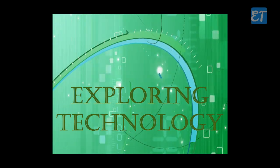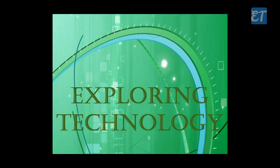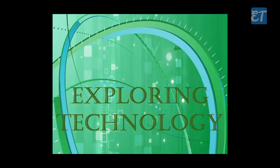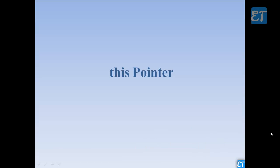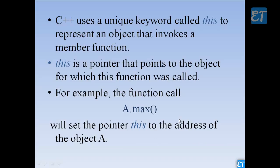Welcome to Exploring Technology. Today we are going to study about the this pointer. C++ uses a unique keyword called this to represent an object that invokes a member function. This is a pointer that points to the object for which the function was called.